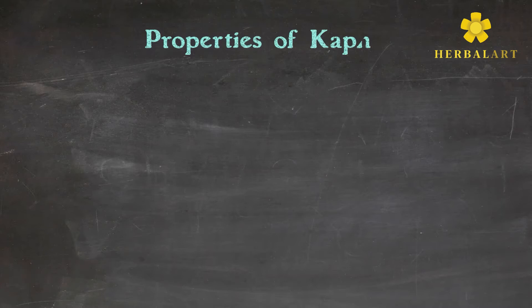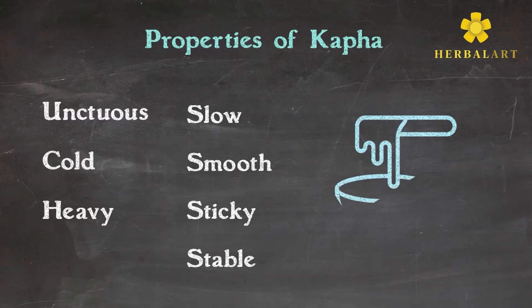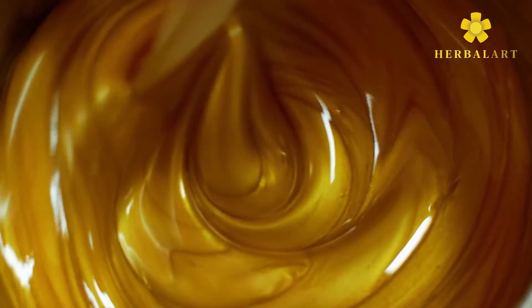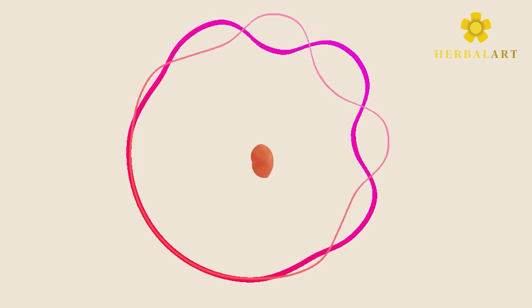Kapha dosha has distinct properties — it is moist, cool, heavy, slow, slimy, sticky, and stable. Kapha dosha is a metabolic pattern that stimulates excess oil secretion in the skin. Vata dosha, because of its excess mobility, enhances the metabolism so that there is excess oil secretion. These two metabolic patterns combine to form acne, along with raktadhatu.